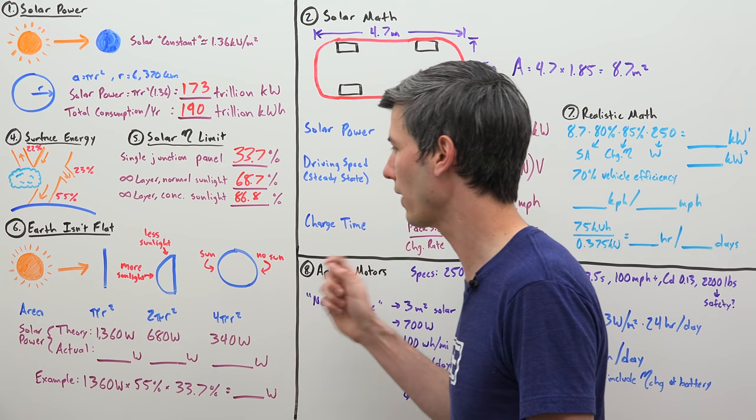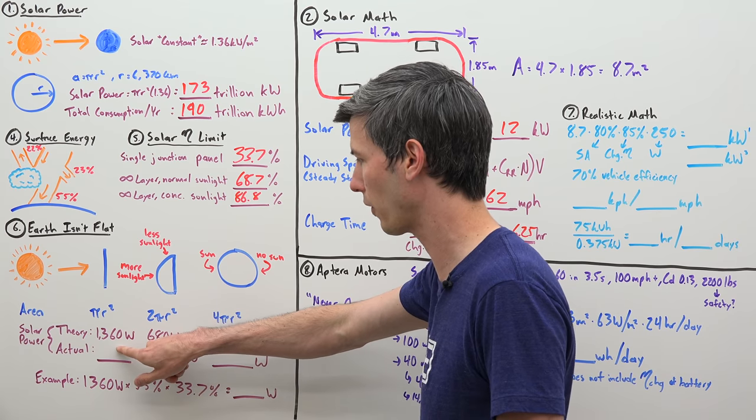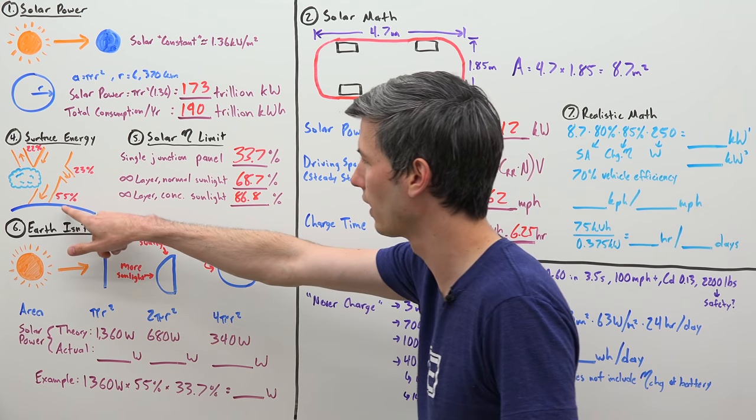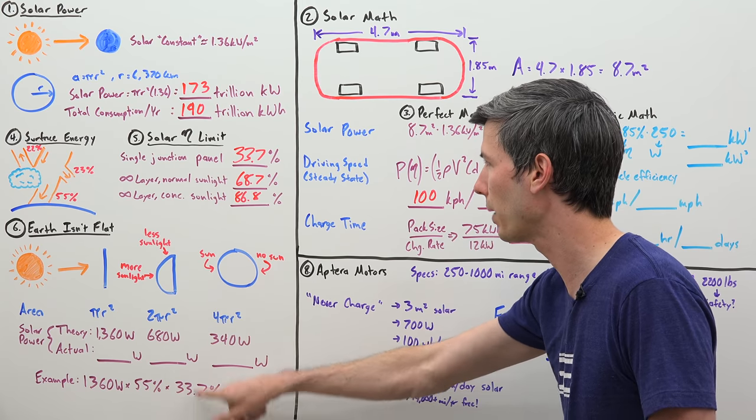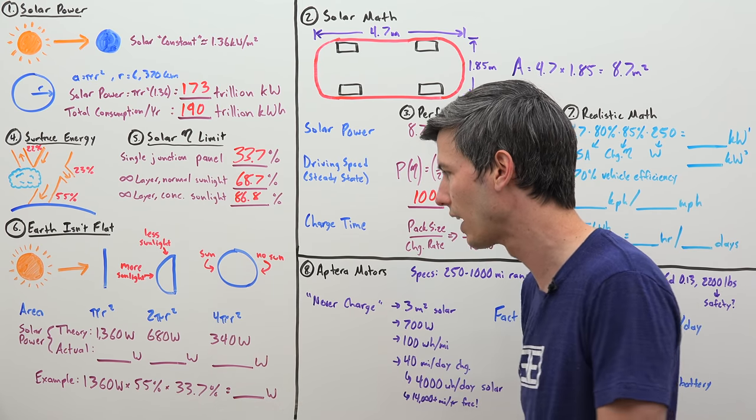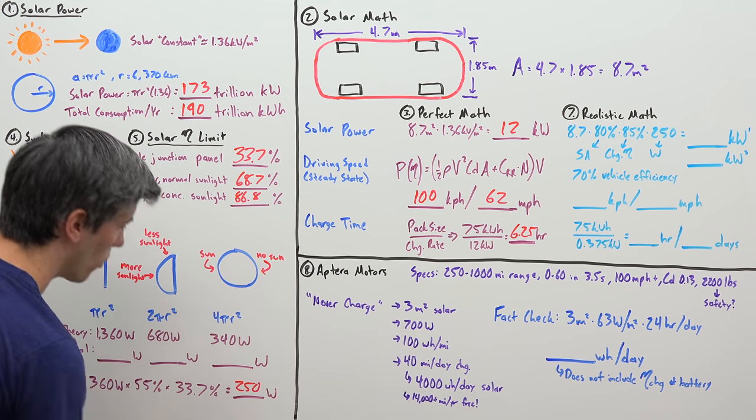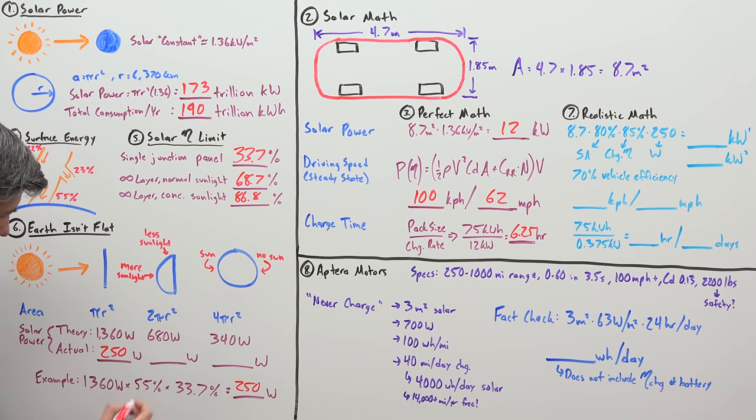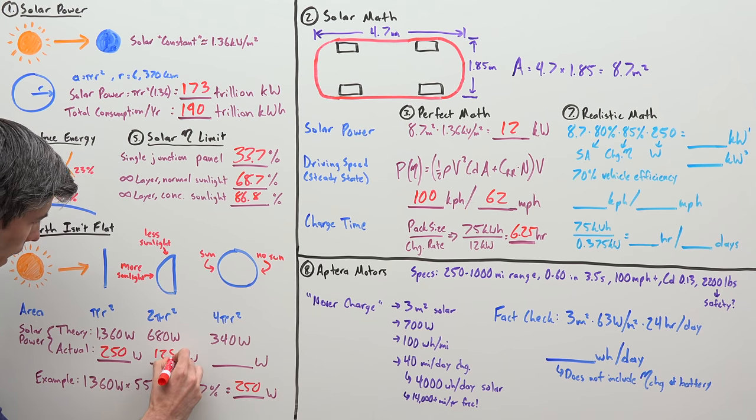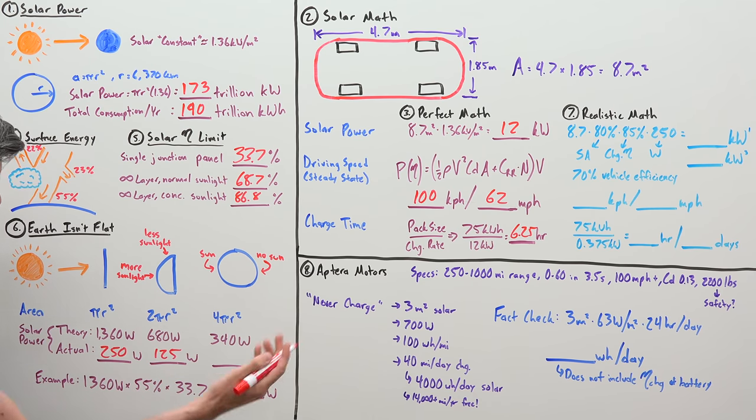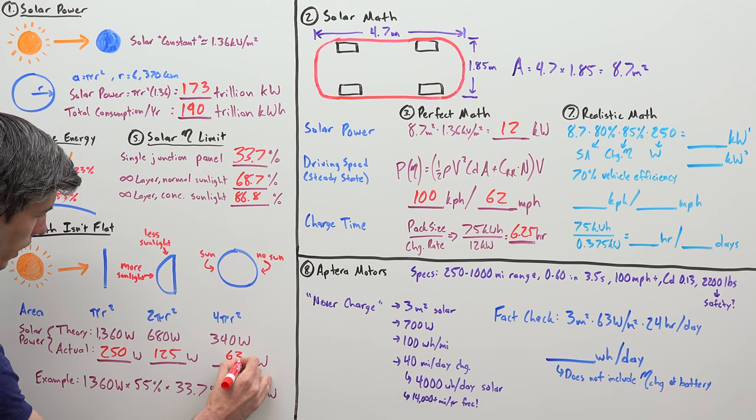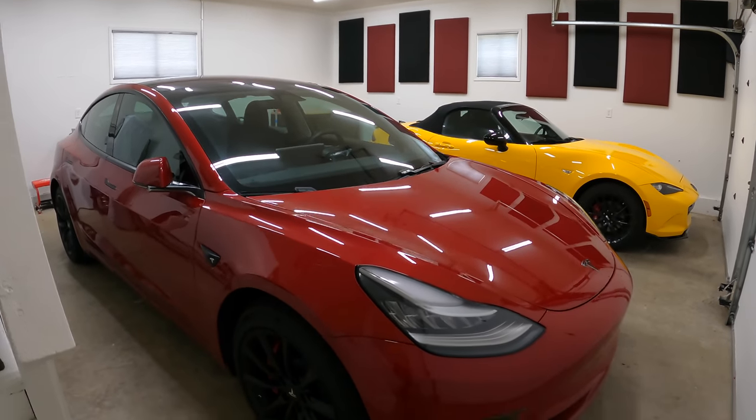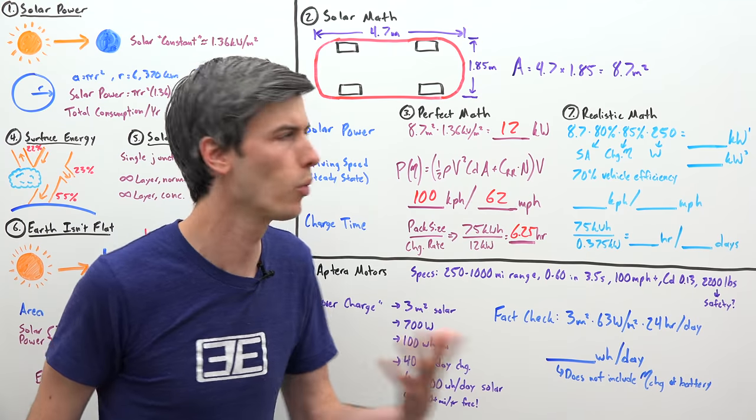So we have three things that we have to take into consideration. So let's start with this first example here. So our theoretical, we've got 1360 watts. Then we have to multiply that by how much is actually hitting your surface, 55%. Then we have to multiply that by our limiting efficiency, 33.7%. And that gives us about 250 actual watts that we have to use. So that's with our flat Earth idea here. If we use a real model of the Earth, well, that's going to cut that in half. So 125. And if we're talking about a 24-hour average cycle, then in any one spot, you're getting an average of about 63 watts of power from the sun per square meter.